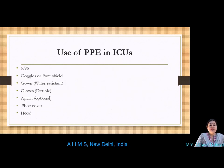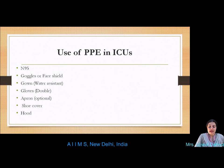PPE used in ICUs includes: N95 respirator or higher, goggles or face shield, water-resistant gown, double gloves, apron, shoe cover, and hood. Nursing care of patients on mechanical ventilation is required when patients develop complications of ARDS and septic shock requiring artificial respiratory support. All healthcare workers performing aerosol-generating procedures — such as open suctioning, intubation, bronchoscopy, or CPR — must use full PPE including gloves, long-sleeved gowns, eye protection, and fit-tested N95 particulate respirators.